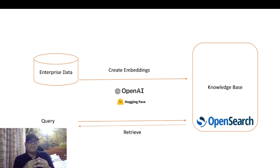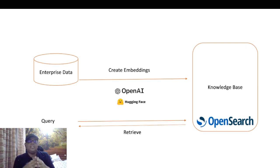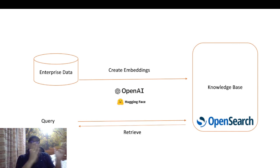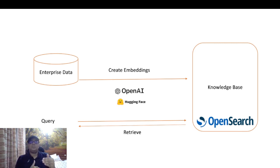In a typical enterprise, there are many departments and each department has a plethora of data. For example, an HR department can have all the recruitment policies. A legal department can have all the legal contracts, NDAs, MSAs, and so on. What you want to do using a knowledge base is to organize and store that data to later retrieve it — creating something logical and coherent.